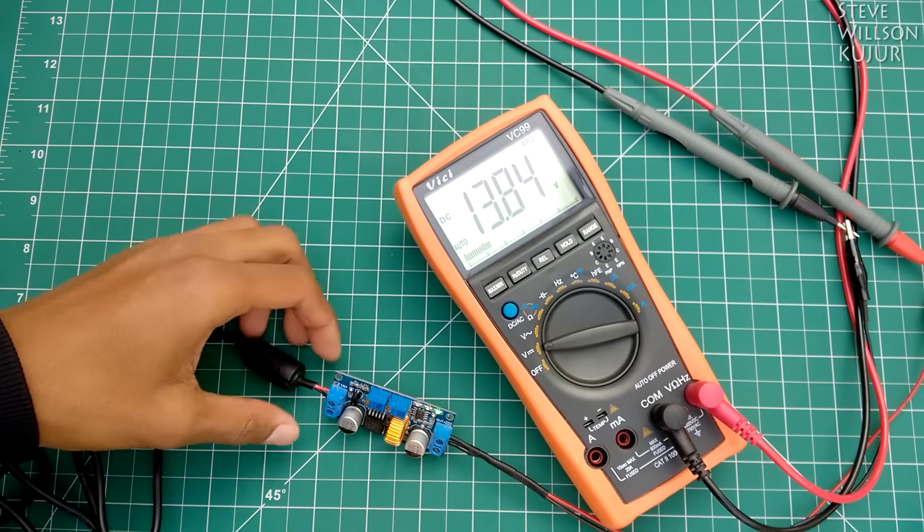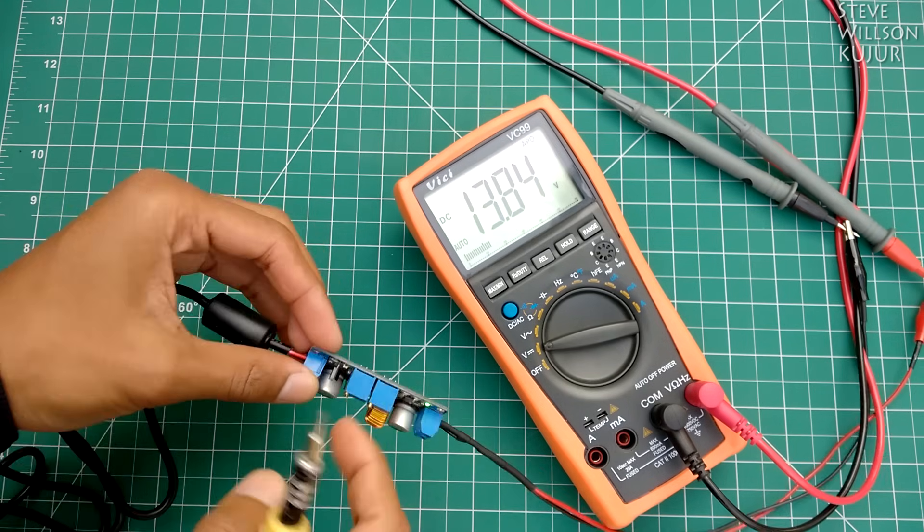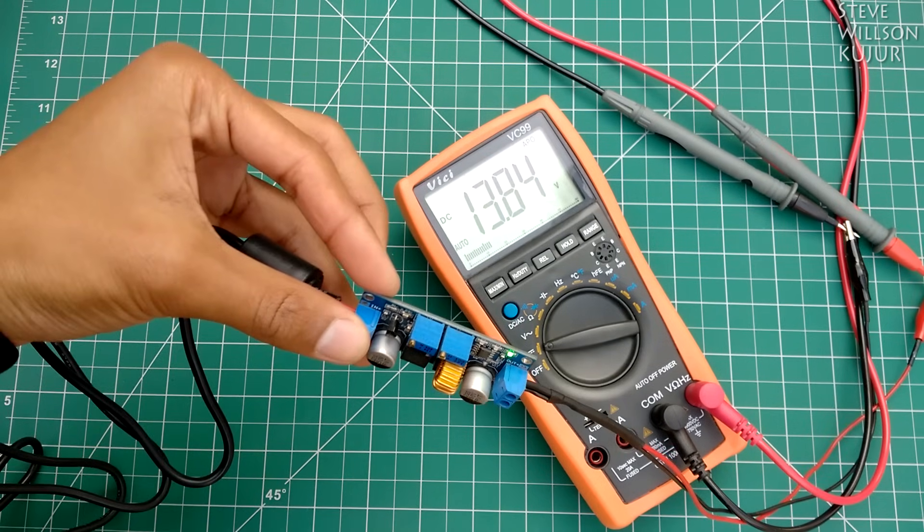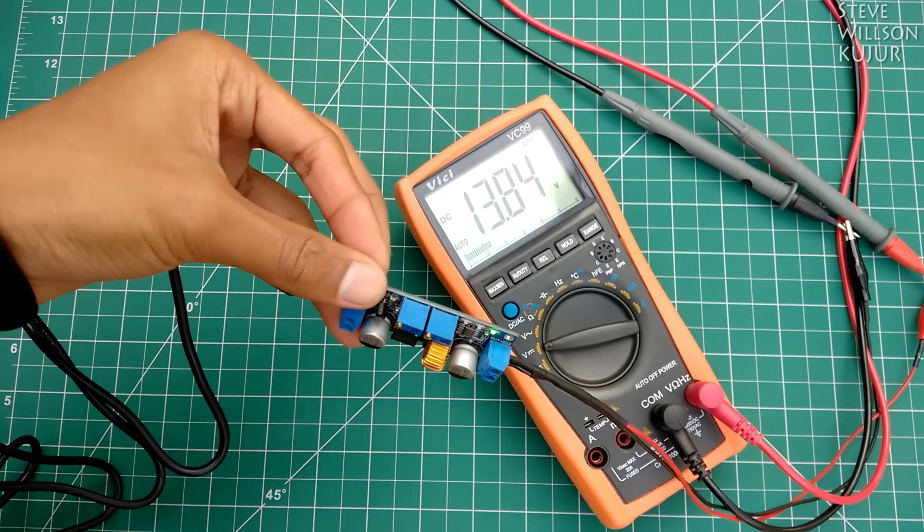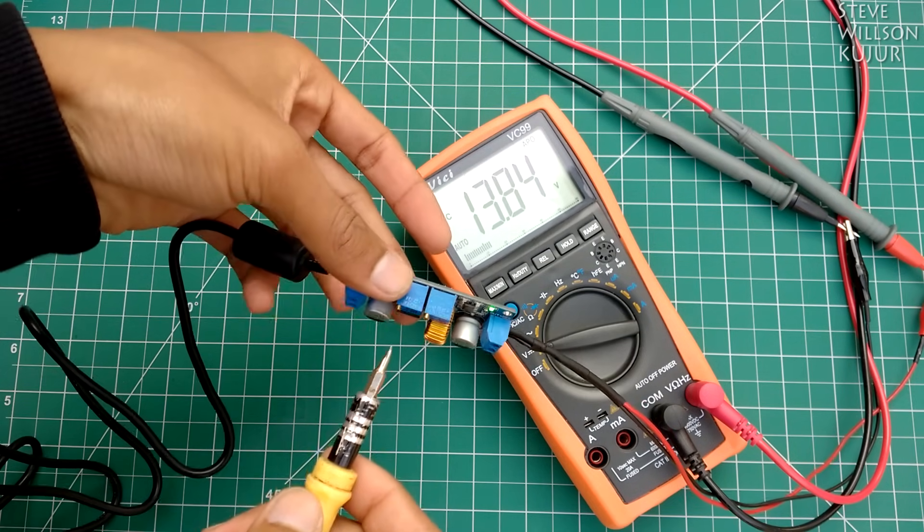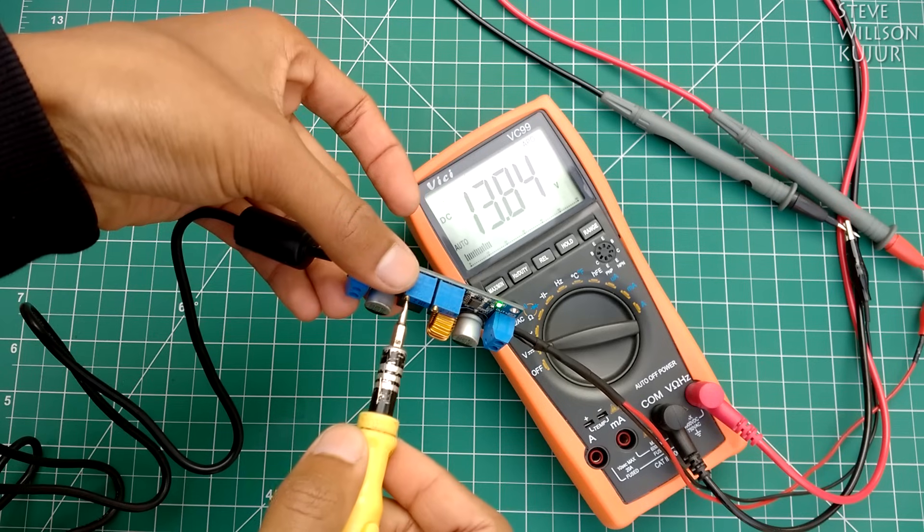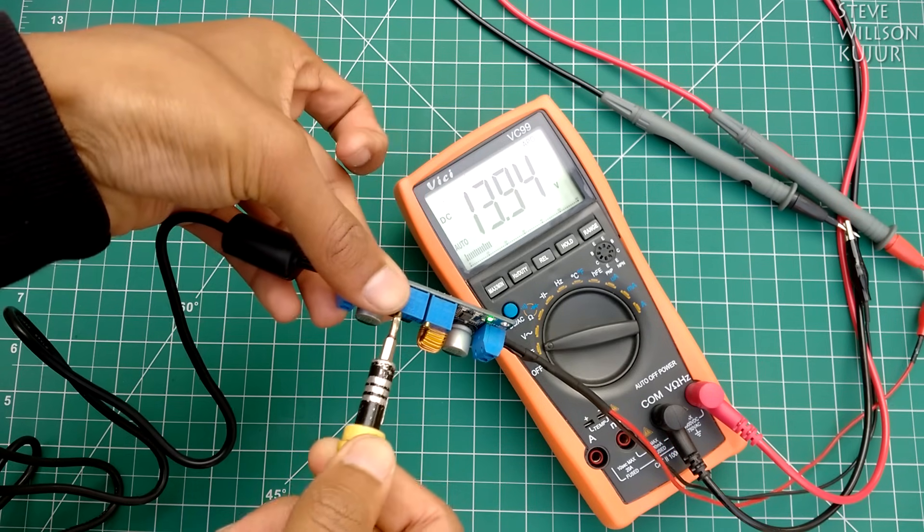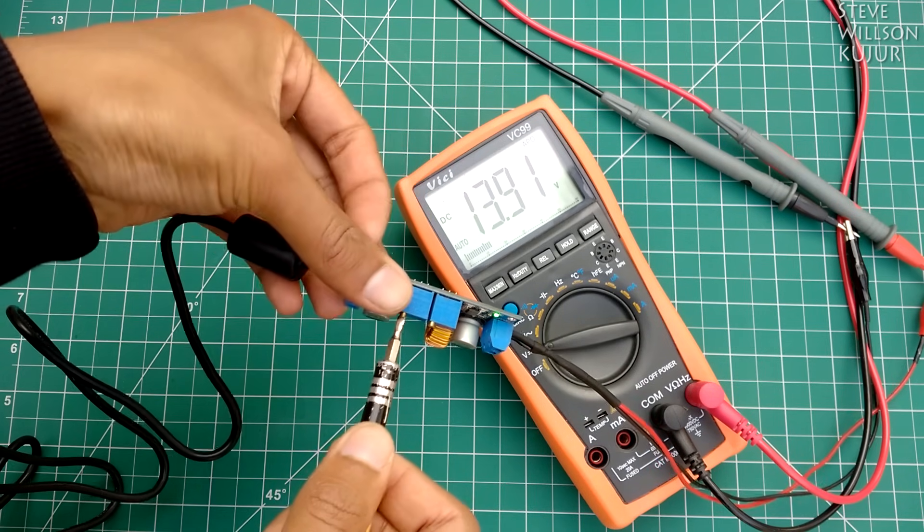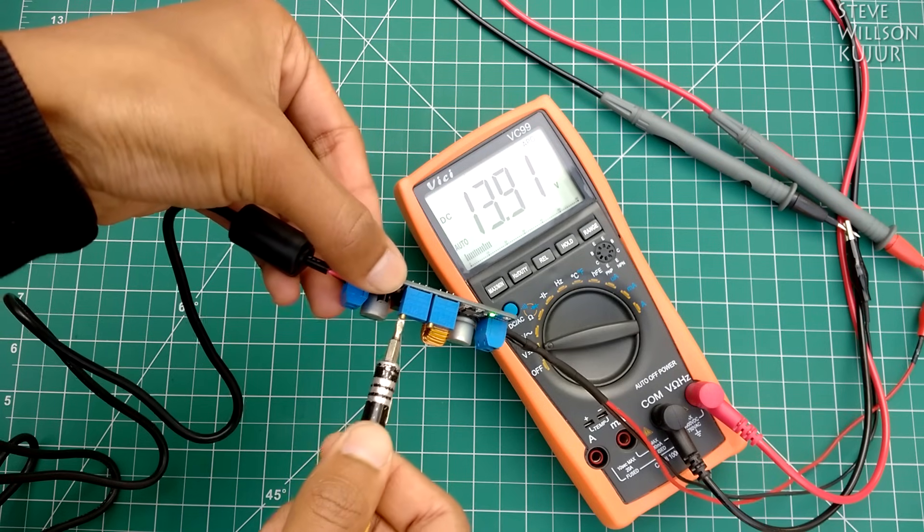Now set the voltage to charge your battery. You can see two potentiometers over here: one is current and one is voltage. Let's find out which is which. This one is current—no, this one is voltage. I'll set the voltage to 14 volts.